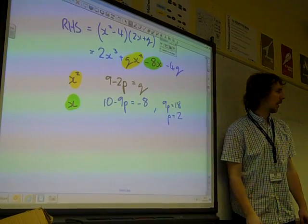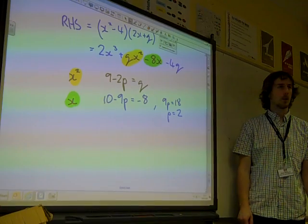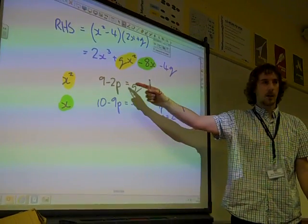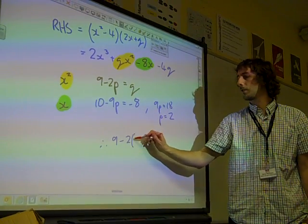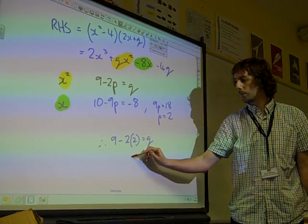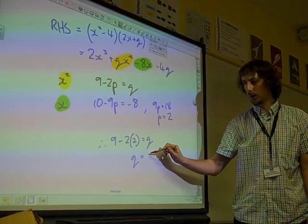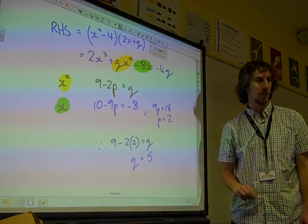So p equals 2. We can go straight out of that. If p equals 2, we can sub it into that equation. 9 minus twice p is q. So q equals 5.